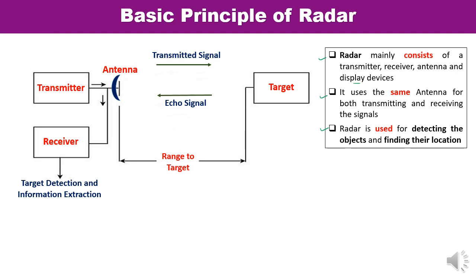You can see here the transmitter and receiver. The transmitter provides the RF signal of sufficient power to be sent via the antenna. The antenna is connected with both the transmitter and the receiver. The duplexer is a device used when a single antenna is used for both transmission and reception. During transmission, the duplexer connects the antenna with the transmitter, creating an open circuit for the receiver. During reception, the duplexer connects the antenna with the receiver.